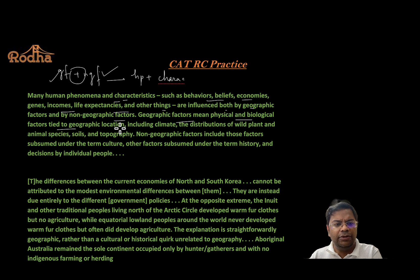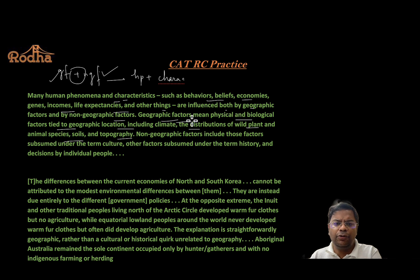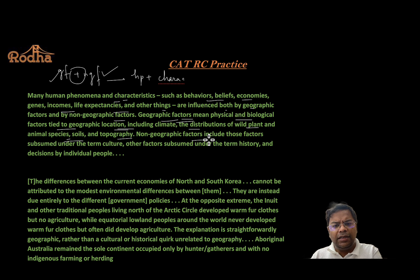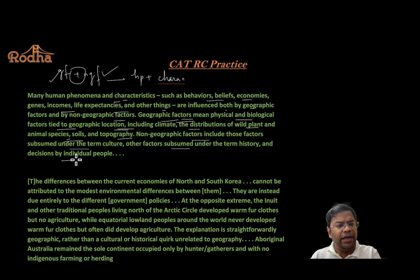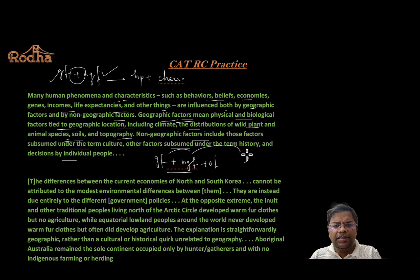Geographic factors mean physical and biological factors tied to geographic location, including climate, distributions of wild plant and animal species, soils, and topography. Non-geographic factors include those subsumed under the term culture, history, and decisions by individual people. So the paragraph covers geographic factors, non-geographic factors, and other factors — and the main focus is that both together influence human phenomena and characteristics.